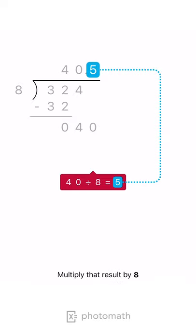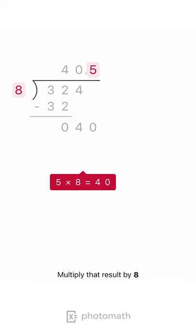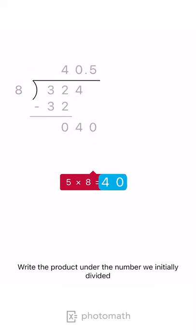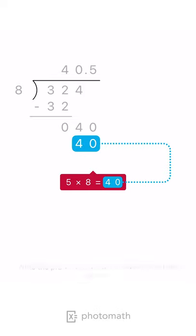Multiply that result by 8. Write the product under the number we initially divided. Subtract the numbers.